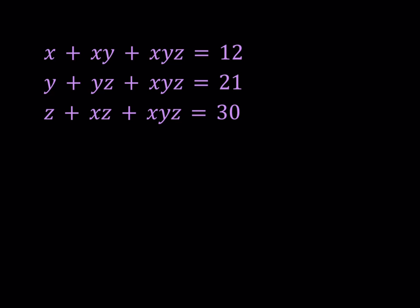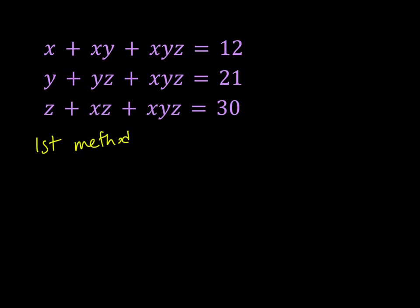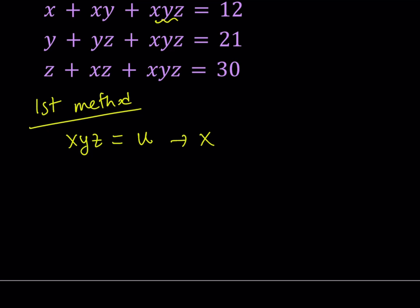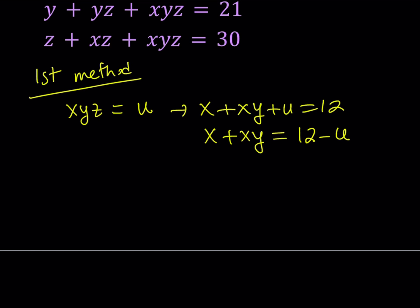So I'm going to start by using substitution. And by the way, I'll be presenting two methods. Hopefully you can compare and contrast. So first method involves letting xyz equal u. From here, using the first equation, we get that x plus xy plus u is equal to 12. You can just isolate the x plus xy here because that's something we are going to be using later on. So x plus xy is going to be 12 minus u. Let's keep that for now and take a look at the third equation.